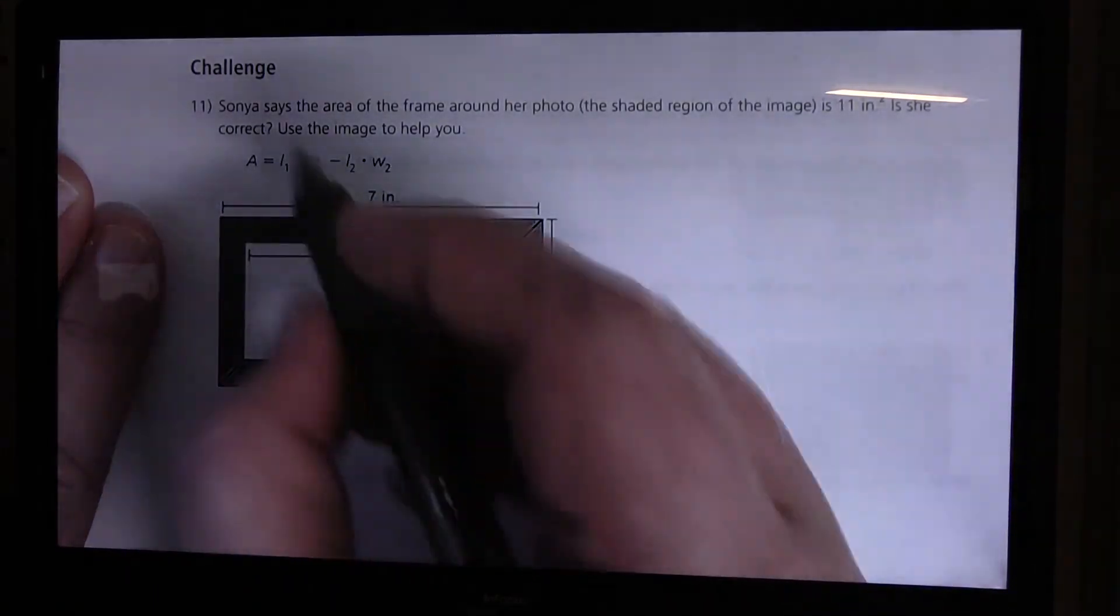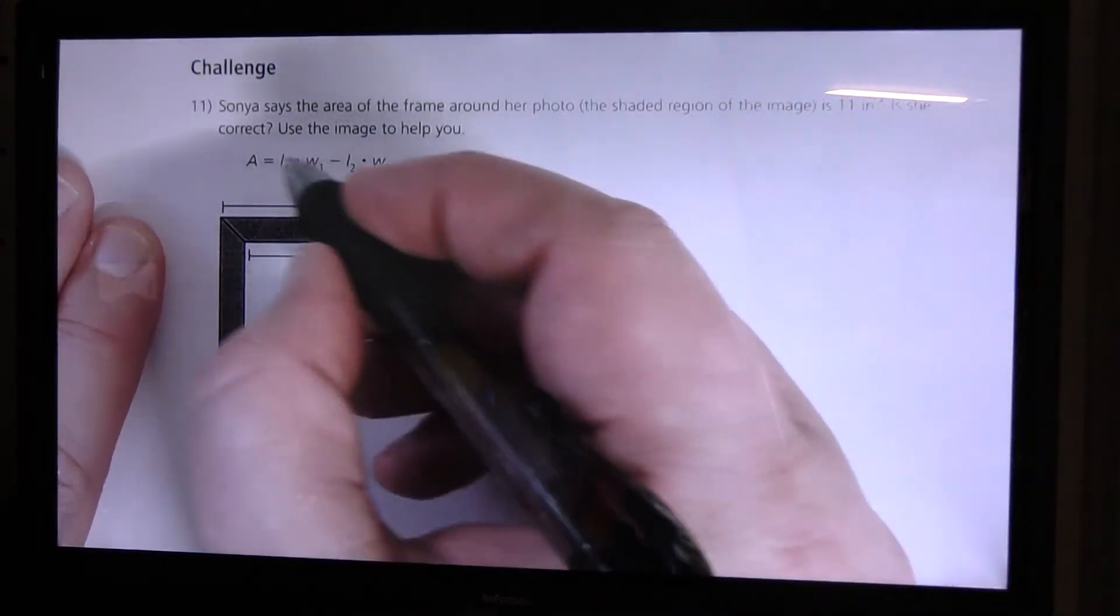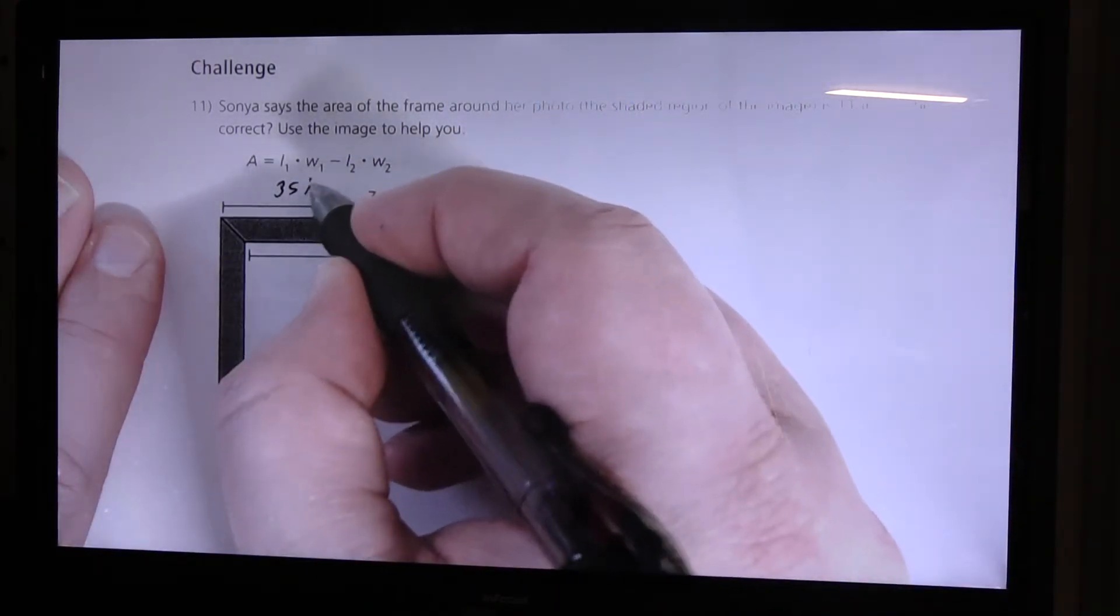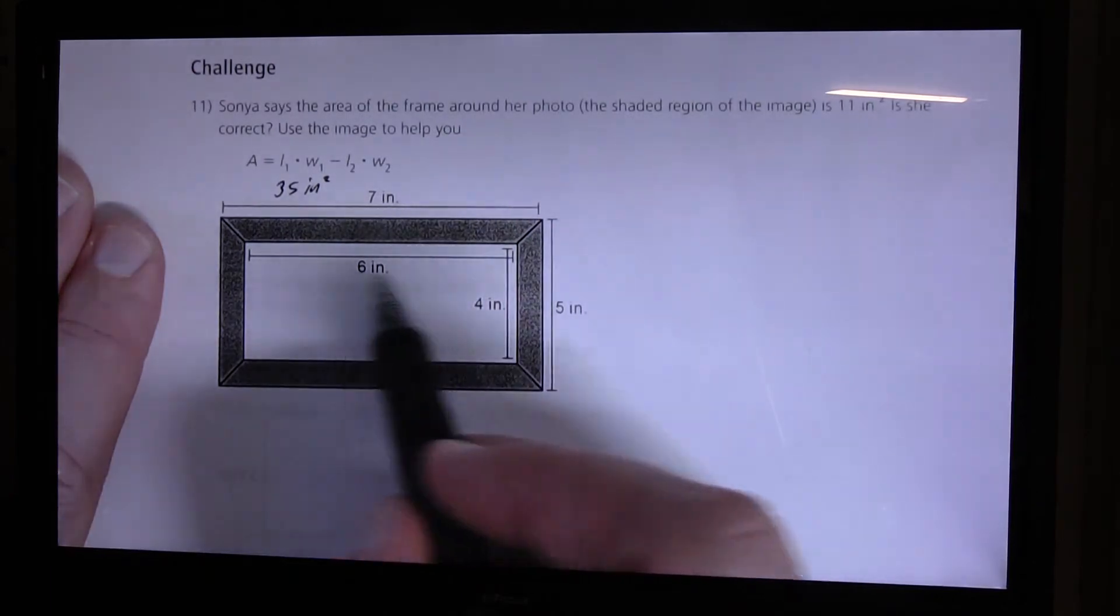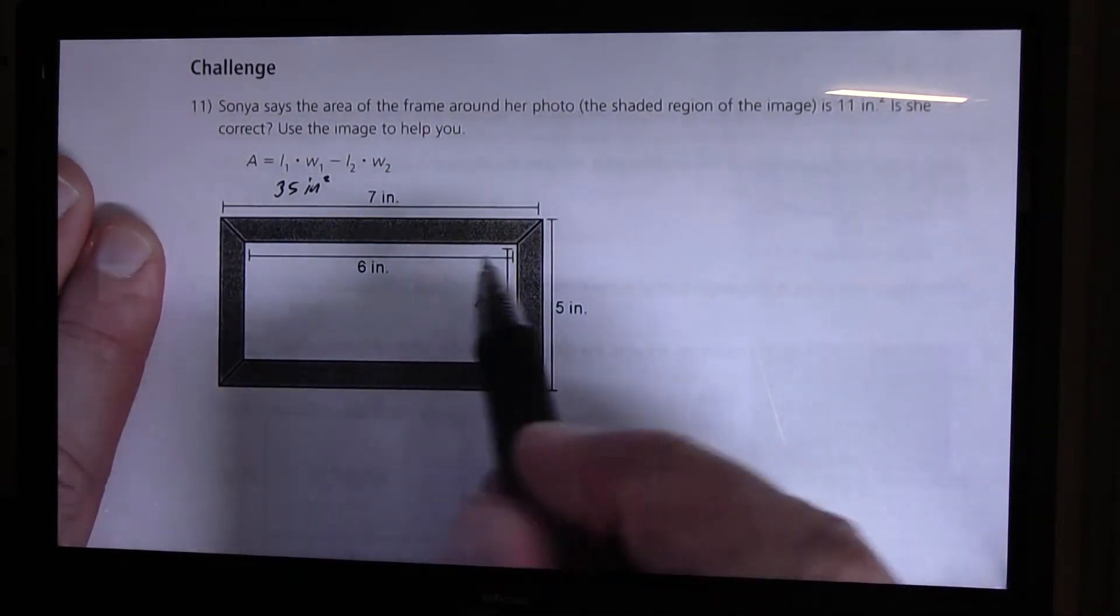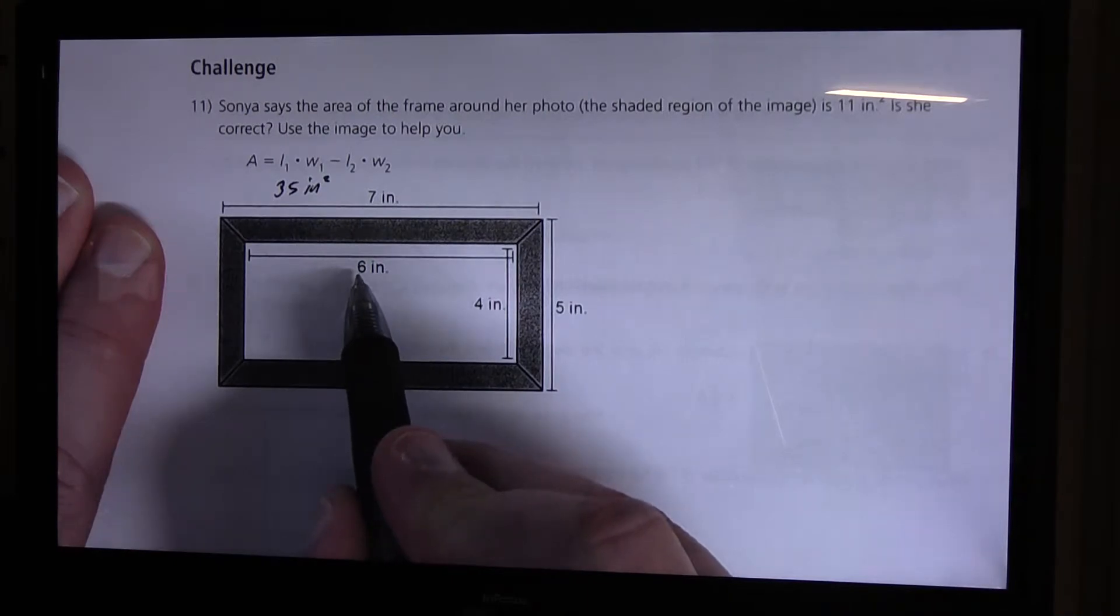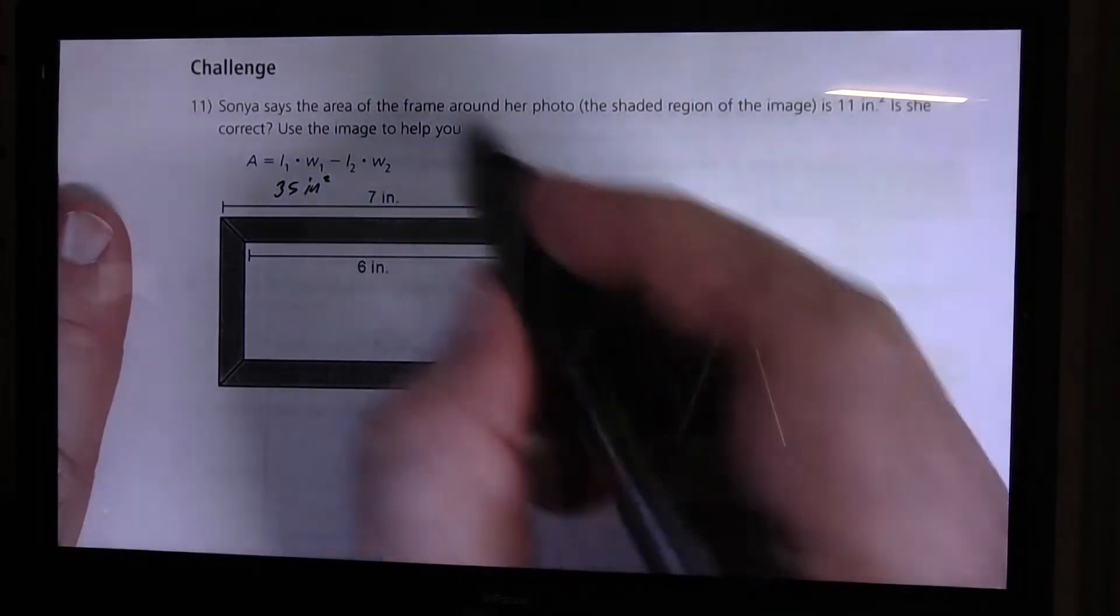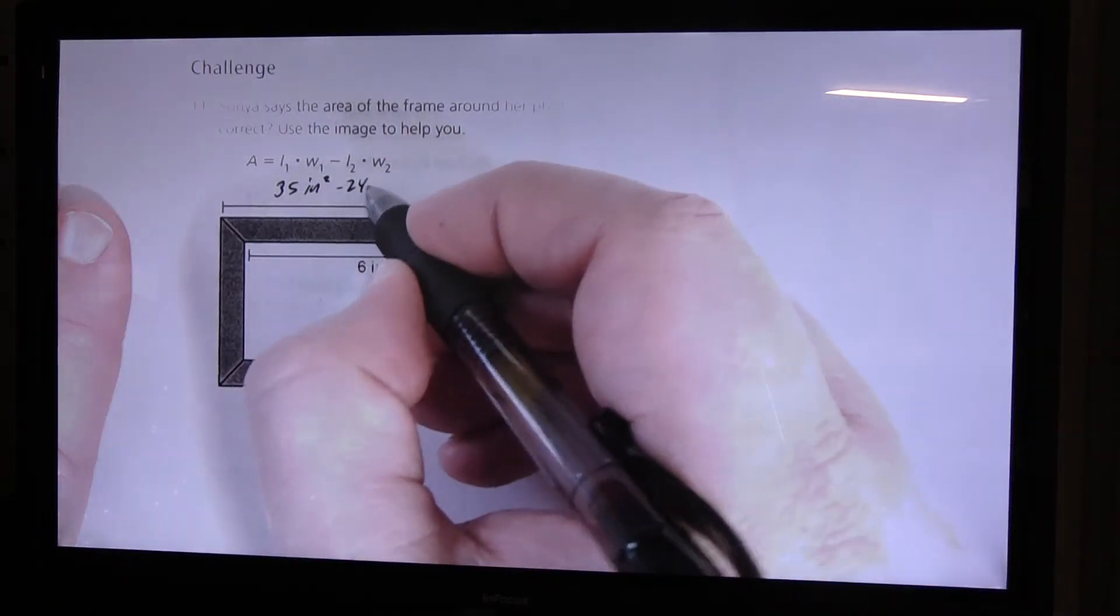And so we can say 7 times 5 and I'm just going to do that mentally and that's going to give me 35 inches square. And then inside this part here it says 6 inches long by 4 inches wide. So that's going to give me 24 inches square.